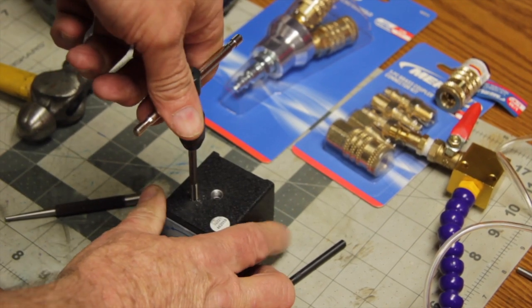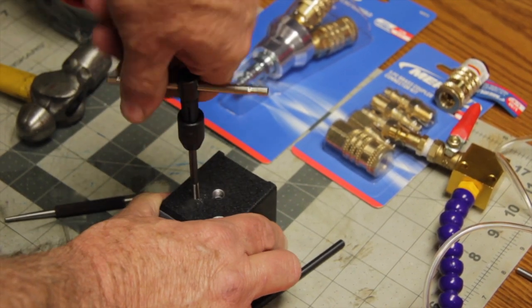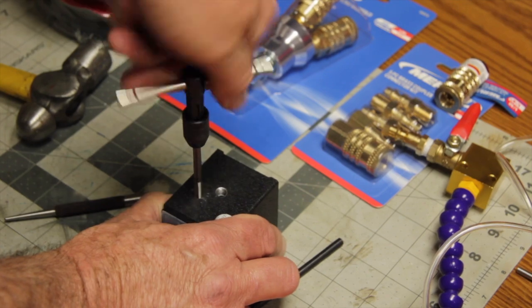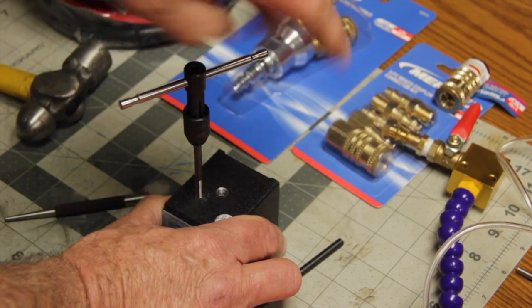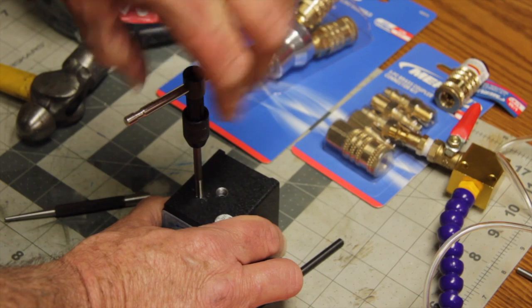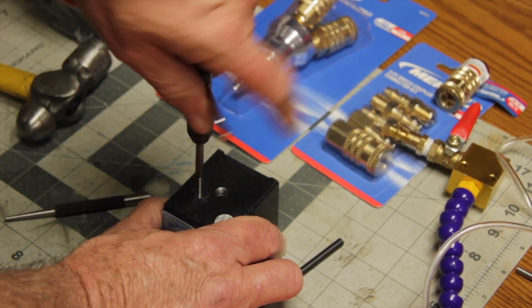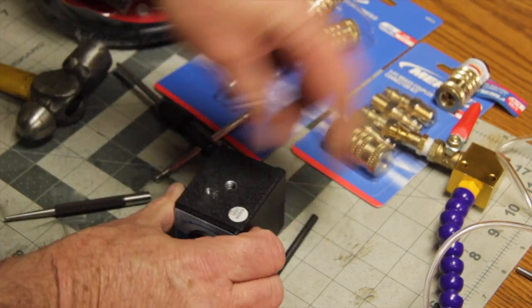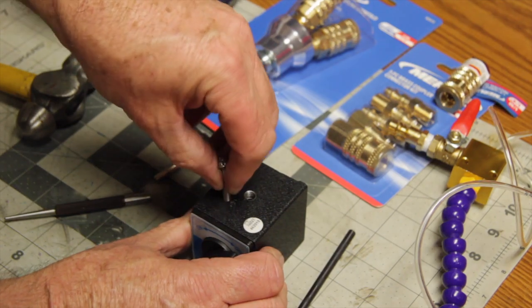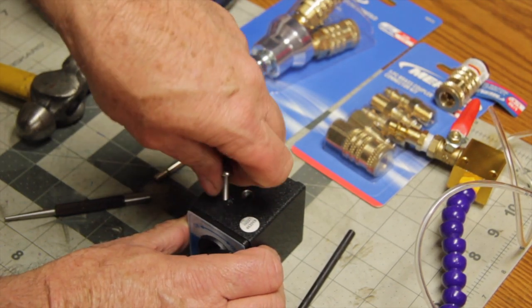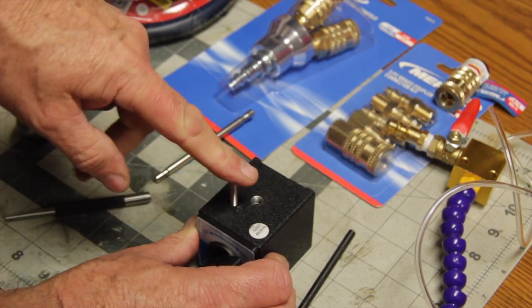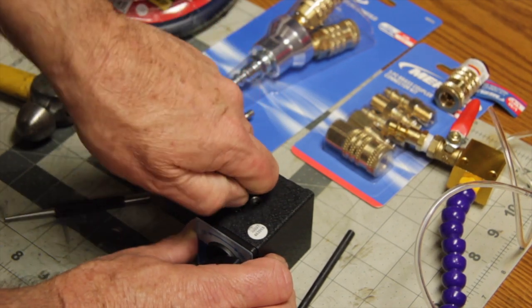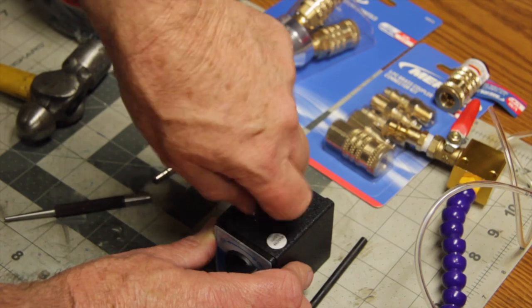When you're working with small taps, you want to be very careful not to twist too hard because you do not want to snap a little tap off in a hole. It then becomes very difficult to get out. A tap is hardened tool steel, so you want to be very careful. Okay, looks pretty good. Let's get one of our screws and do a test fit. I normally buy my screws a little extra long so I can cut them to size. It's better to have a slightly too-long screw than a too-short screw.